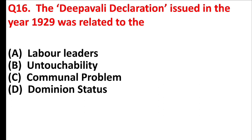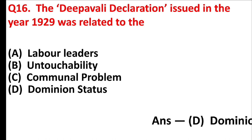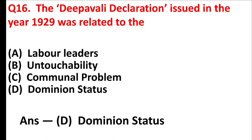The Dipavali Declaration issued in the year 1929 was related to — Answer is Option D, Dominion Status.